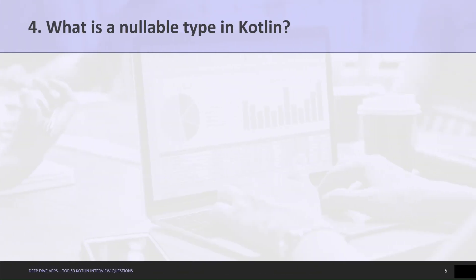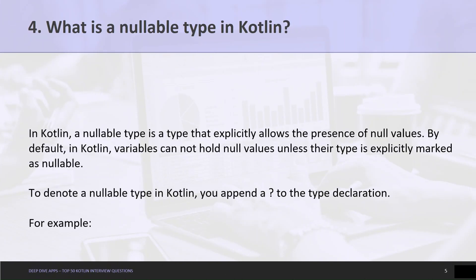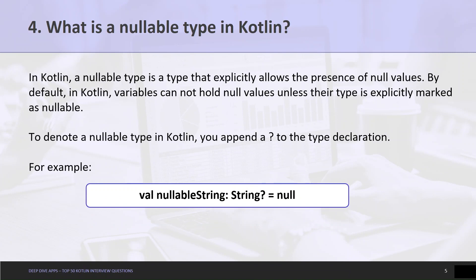Question 4: What is a nullable type in Kotlin? In Kotlin, a nullable type is a type that explicitly allows the presence of null values. By default, variables cannot hold null values unless their type is explicitly marked as nullable. To denote a nullable type, you append a question mark symbol to the type declaration. As shown in the given example, we have defined a variable named nullableString as a String that can be null.